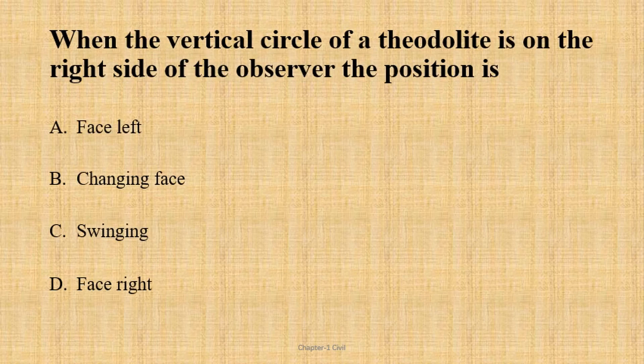This question is about the theodolite. When the vertical circle of the theodolite is on the right side of the observer, the position is called face right. The vertical circle on the left side is face left. Changing from one face to the other is called changing the face.